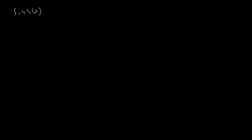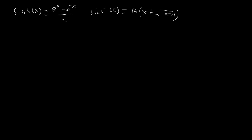Before we start, we need to cover a few things about the special functions that we're using. Sinh(x) is called hyperbolic sine of x, and it equals (e^x − e^(−x)) / 2. Sinh⁻¹(x) is the inverse function, equal to ln(x + √(x² + 1)). The derivative of sinh⁻¹(x) is 1 / √(1 + x²).